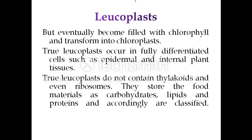When sunlight falls on these leucoplasts for a long time, they can be converted into chloroplasts by the development of chlorophyll pigment. The true leucoplasts occur in fully differentiated cells such as epidermal and internal plant tissues. True leucoplasts do not contain thylakoids or ribosomes, and they store food materials like carbohydrates, lipids, and proteins.